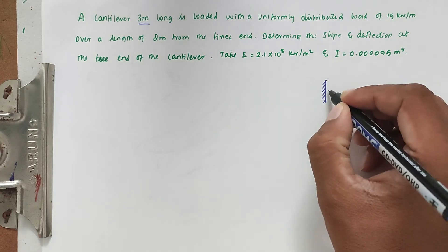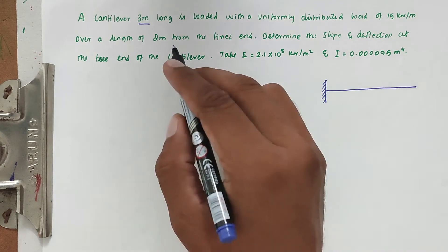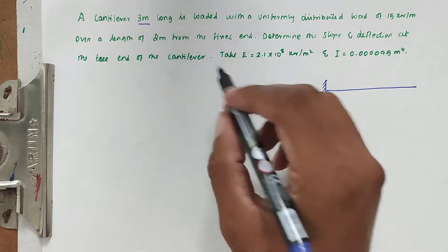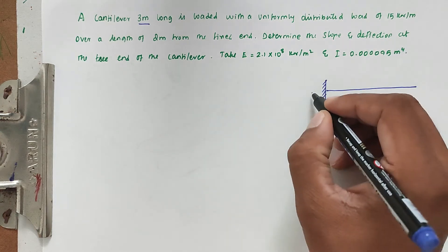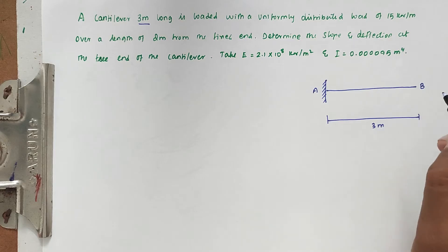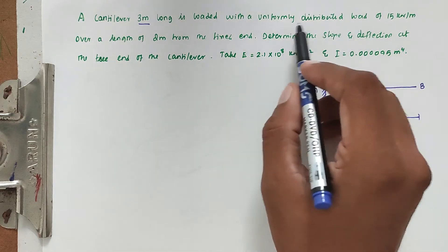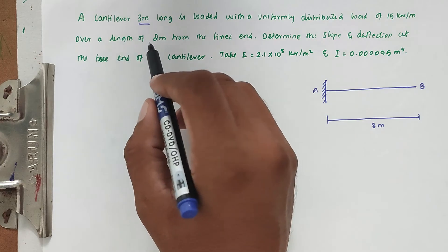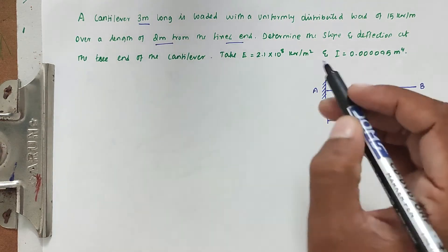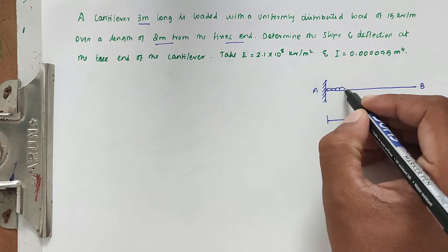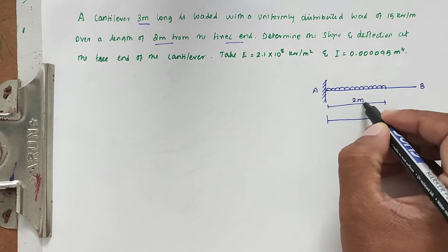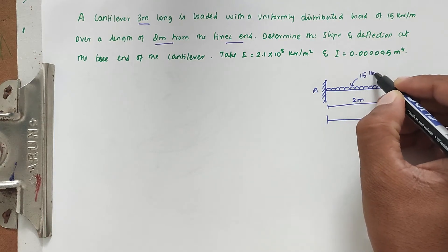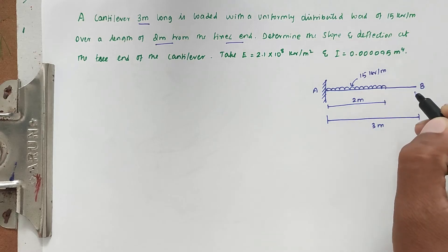This is the cantilever beam. The total length is 3 meters. This is fixed end A and this is free end B. From the fixed end, there is a UDL for 2 meters, so the UDL is 15 kilonewtons per meter over 2 meters. The remaining portion is 1 meter.